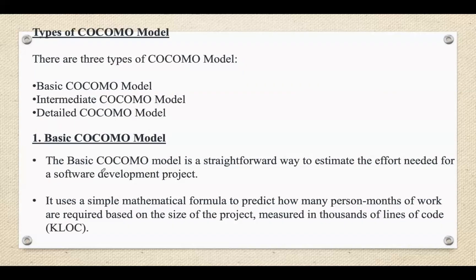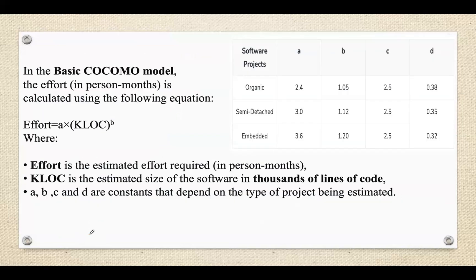Types of COCOMO model include three categories: Basic COCOMO, Intermediate COCOMO, and Detailed COCOMO. Basic COCOMO is a very simple version used to estimate the effort in person-months and the time required to complete a software project. It provides an initial estimate based primarily on the size of the software system measured in KLOC and the type of project being developed — organic, semi-detached, or embedded. Key features: input includes the estimated size of the software in KLOC and the type of project; output includes effort in person-months and time required to complete the project.